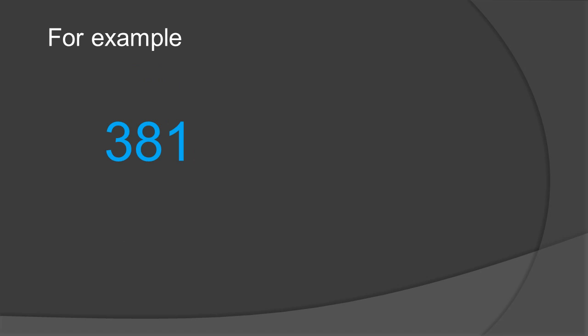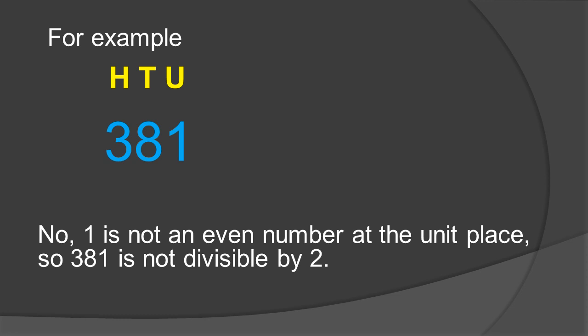See this second example. The number is 381. We have to see whether 381 is divisible by 2 or not by following rule number 1. We have to only focus at the unit place. We have 1 at the unit place. 1 is not an even number, so the answer will be no — 1 is not an even number at the unit place, so 381 is not divisible by 2.